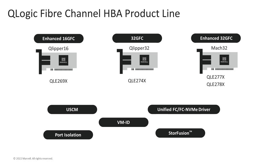Here's the portfolio of QLogic HPAs that support Universal SAN Congestion Mitigation. The QLE 2690 series are the enhanced 16-gigabit HPAs, the QLE 2740 series are the 32-gig fiber channel HPAs, and the QLE 2770 series are the enhanced 32-gig fiber channel HPAs. All these adapters support SAN congestion mitigation along with other key features like port isolation, unified drivers for NVMe, and VMID and StoreFusion features.